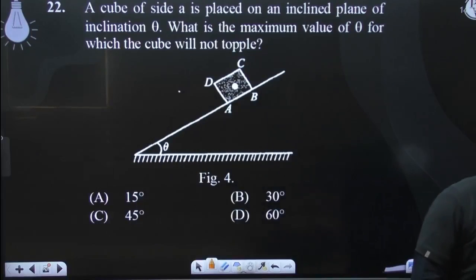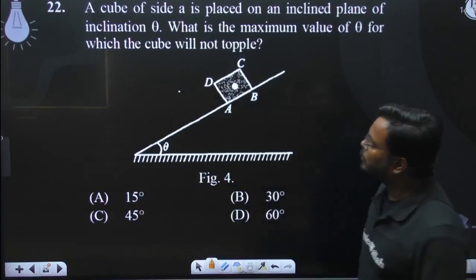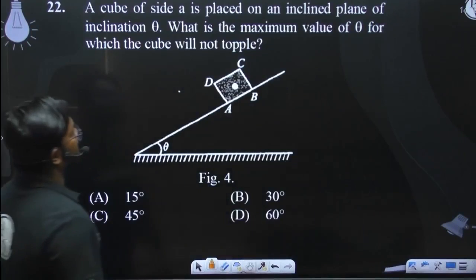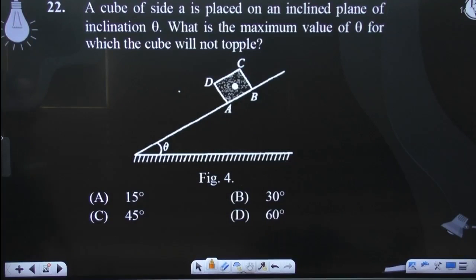Question number 22. A cube of side A is placed on an inclined plane of inclination theta.